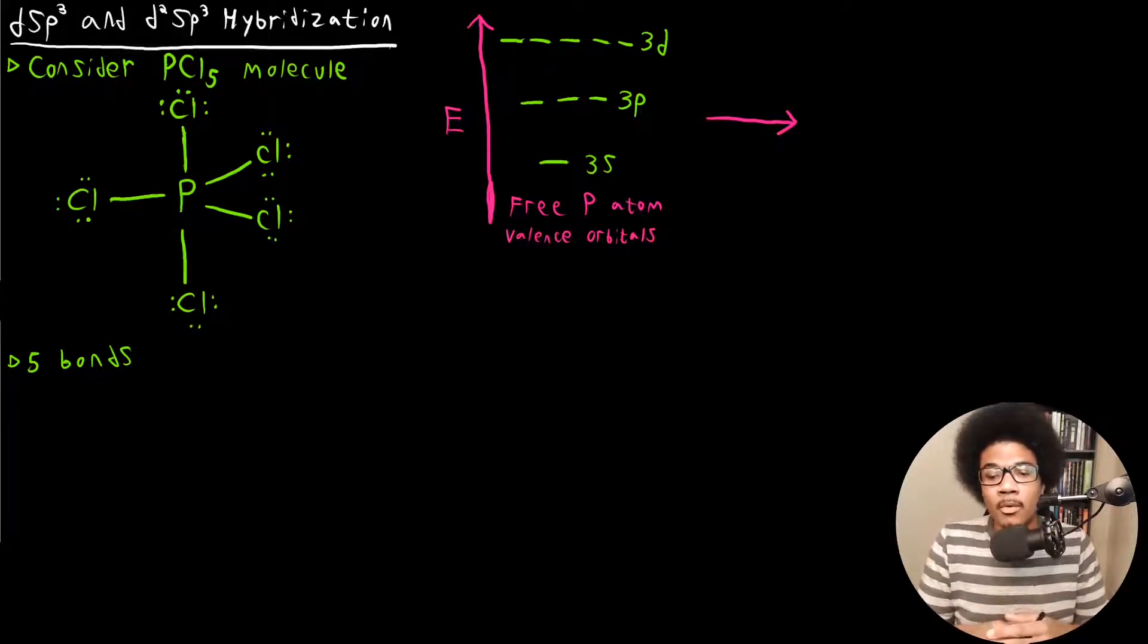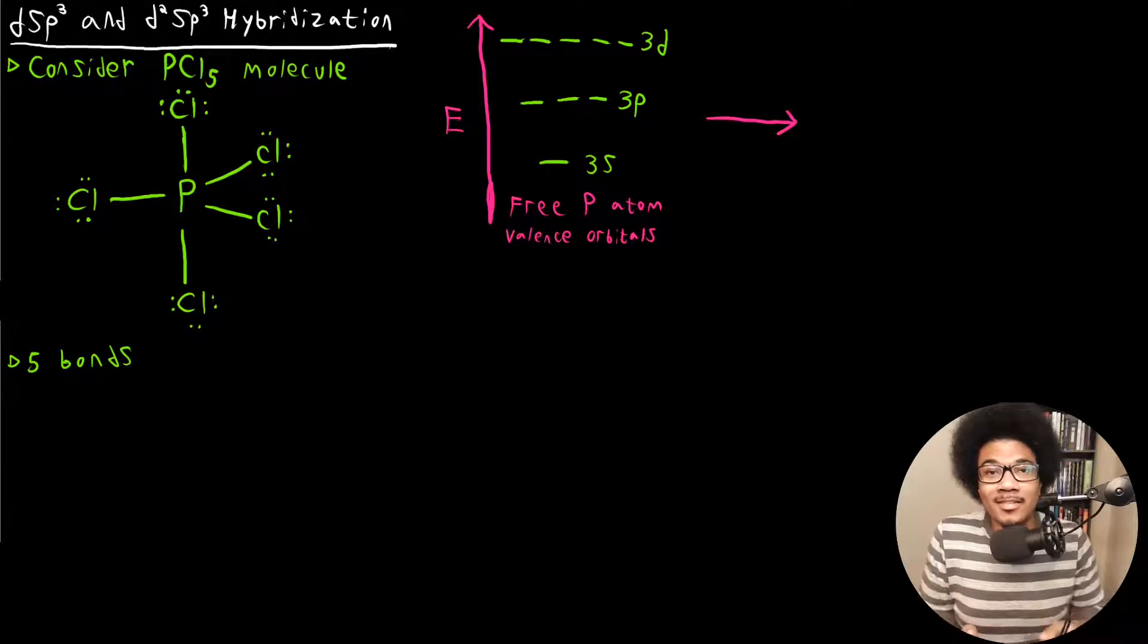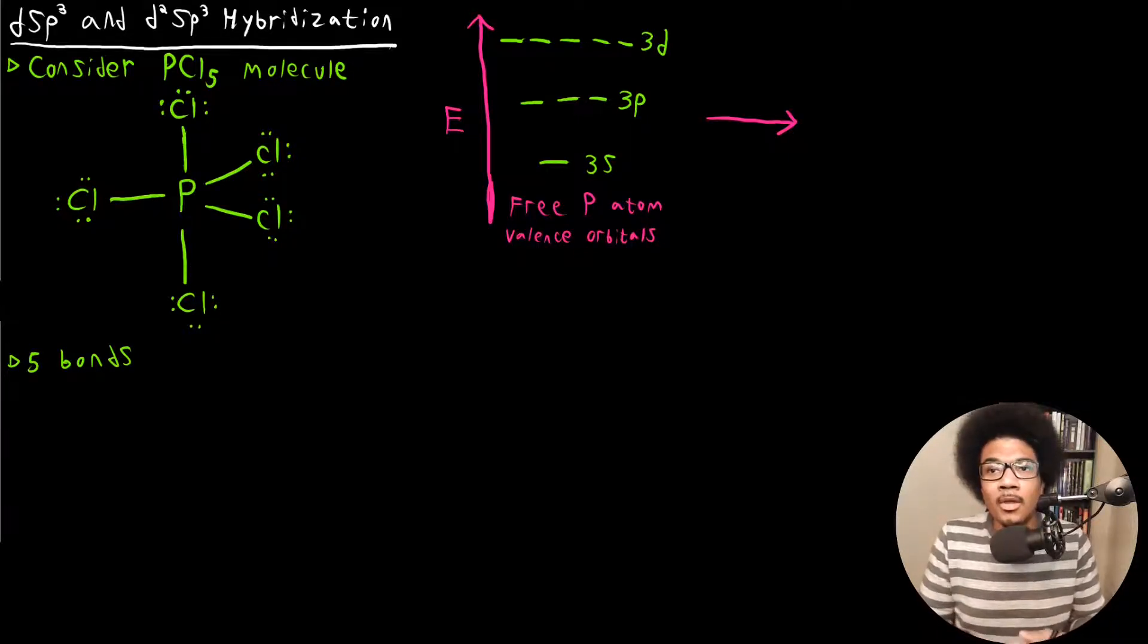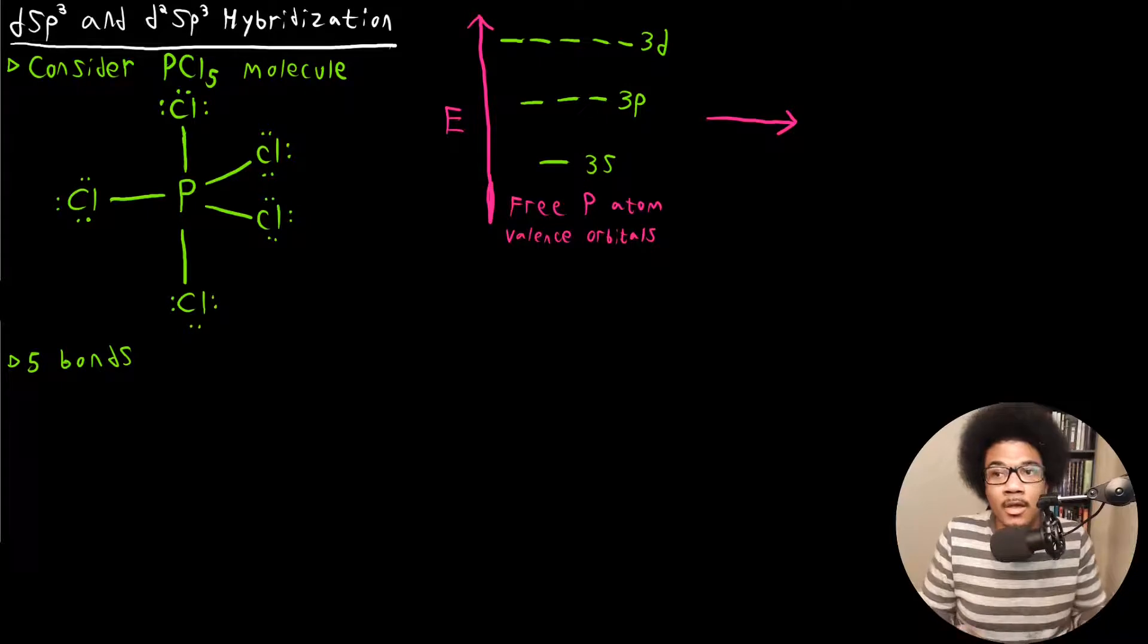Remember in the first unit when I discussed the octet rule, and we discussed a few exceptions to the octet rule, the rationale that I gave for why some atoms can bypass the octet rule was because they have d-orbitals that are available that get involved in the bonding. And outside of that involved in the bonding, I really didn't say much else about why there are exceptions to the octet rule.